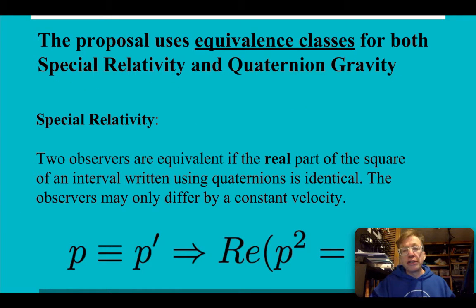So this proposal uses equivalence classes for both special relativity and my new proposal, quaternion gravity, or sometimes I call it space times time invariance as gravity. All right. So special relativity, you got two observers. They're equivalent if the real part of the square of the interval written using quaternions is identical. The observers may differ by a constant velocity. In other words, they're moving at relative speed to each other.